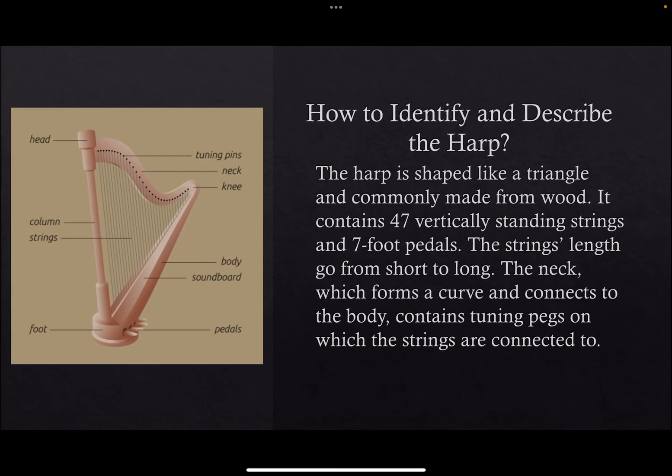How to identify and describe the harp. The harp is shaped like a triangle and commonly made from wood. It contains 47 vertically standing strings and 7 foot pedals. The strings' length goes from short to long. The neck, which forms the curve and connects to the body, contains two tuning pegs on which the strings are connected to.